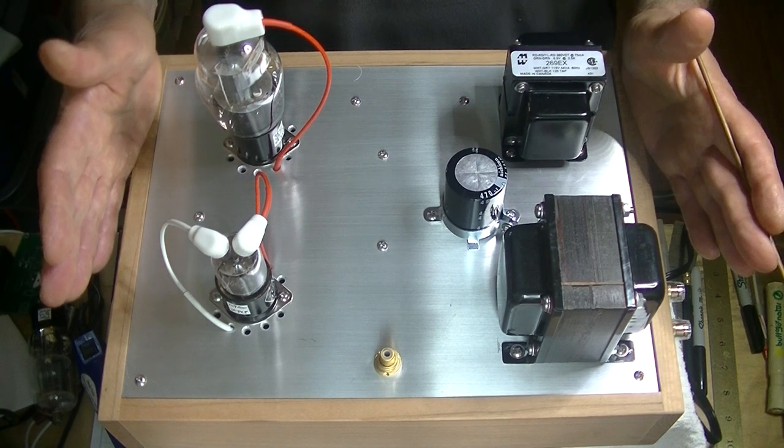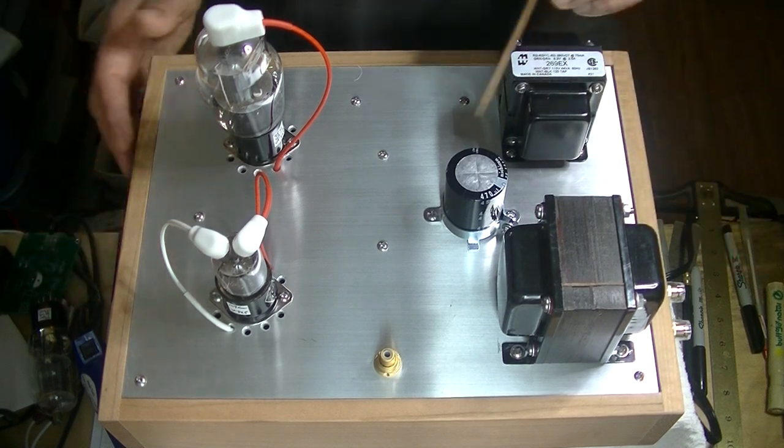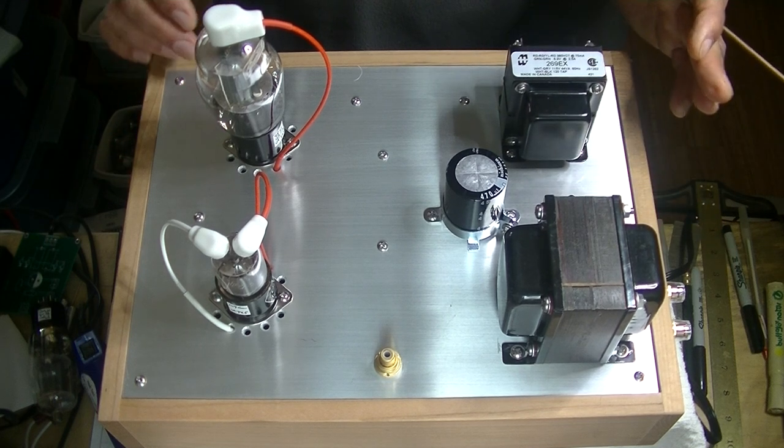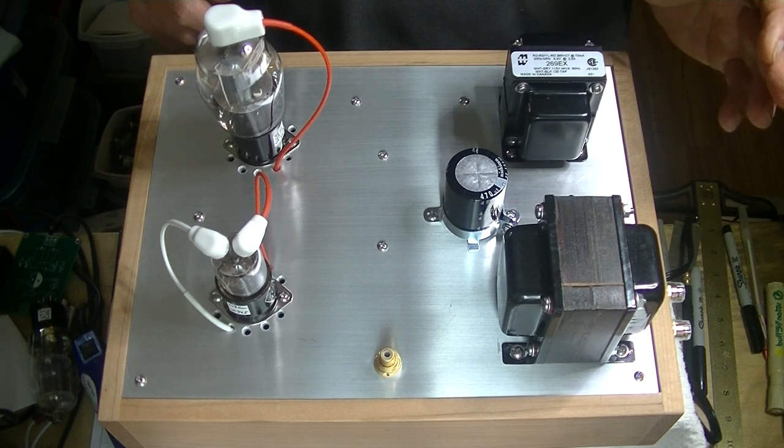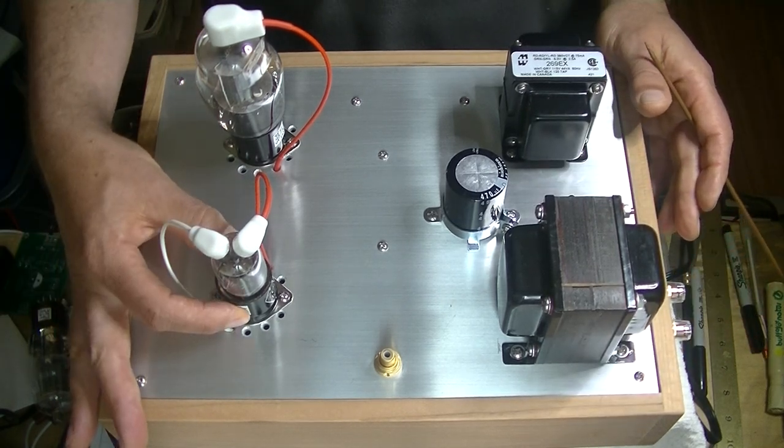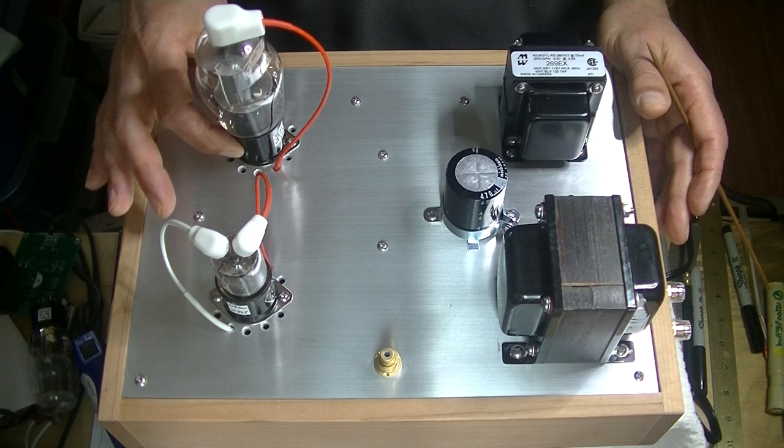So, it's a very simple mono block. It's got an RCA in, just a simple on-off switch. It's got a power transformer, an output transformer, a single driver tube, and a single output tube.